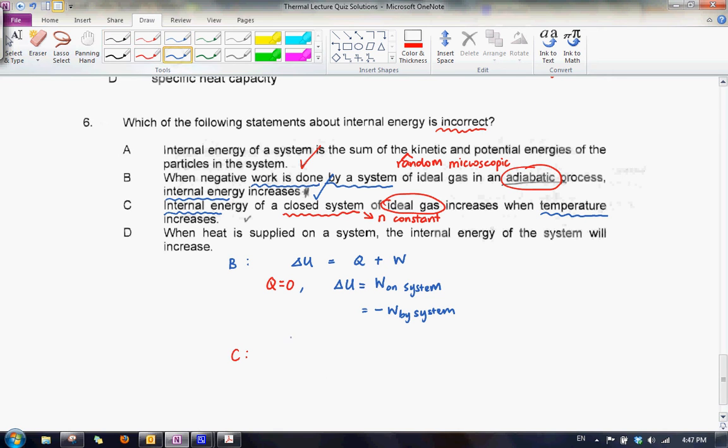So if we look at it, for this one, we do have a relationship. We know that for an ideal gas, the internal energy is equals to some constant times nRT.